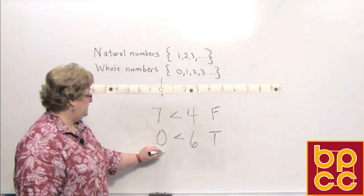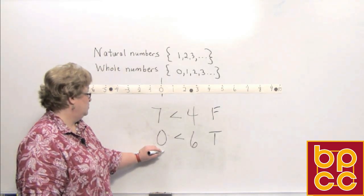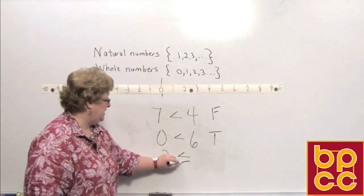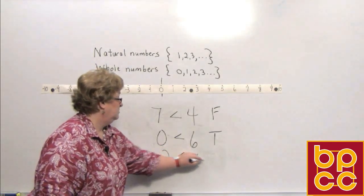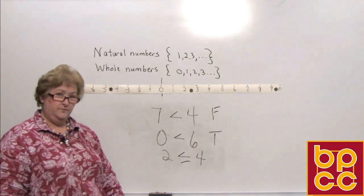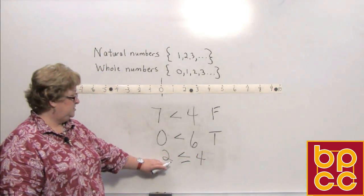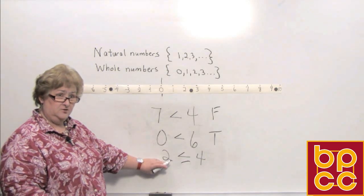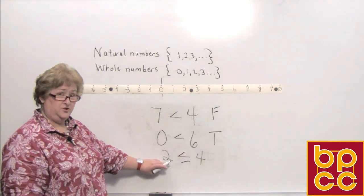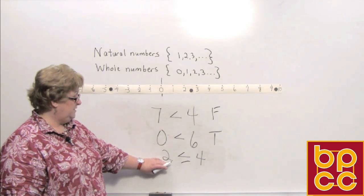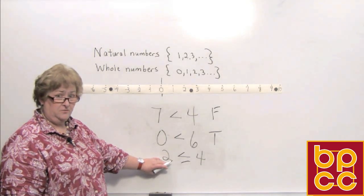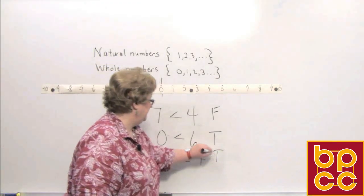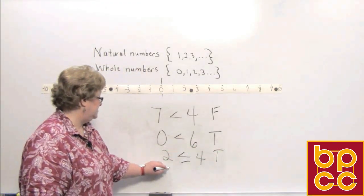How about: two is less than or equal to four? Looking at two and four on the number line, four is to the right of two. Two is not equal to four, but it is less than four, so this is a true statement.